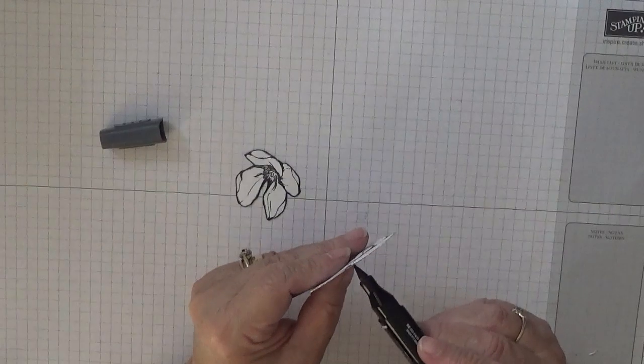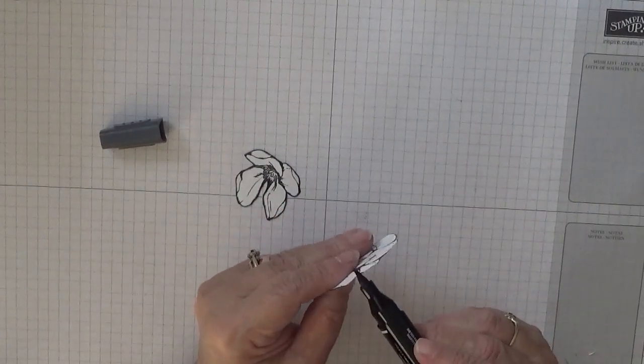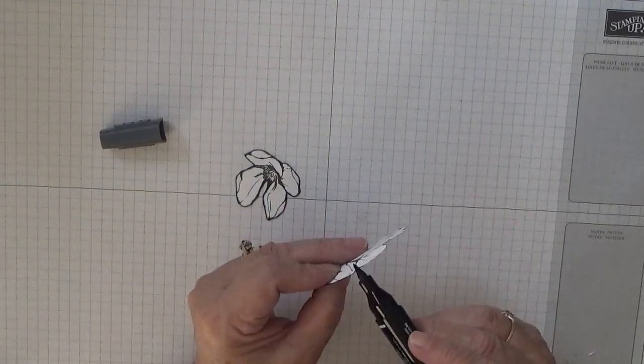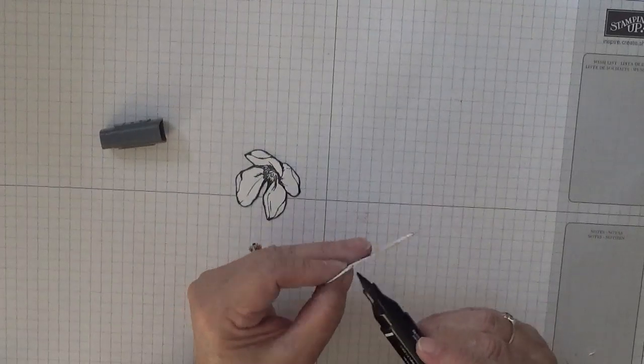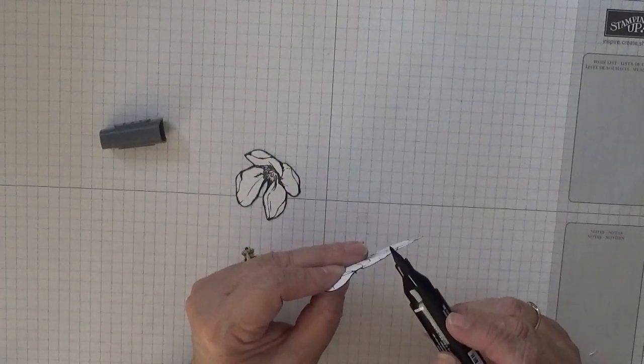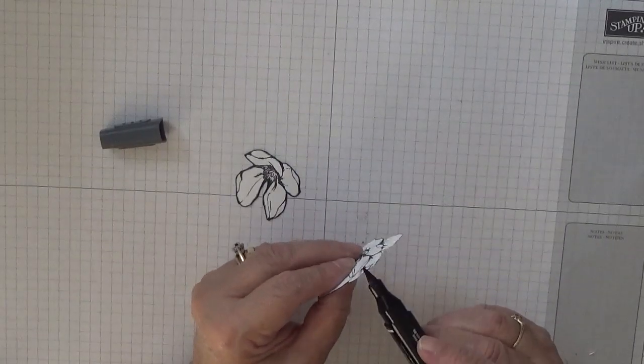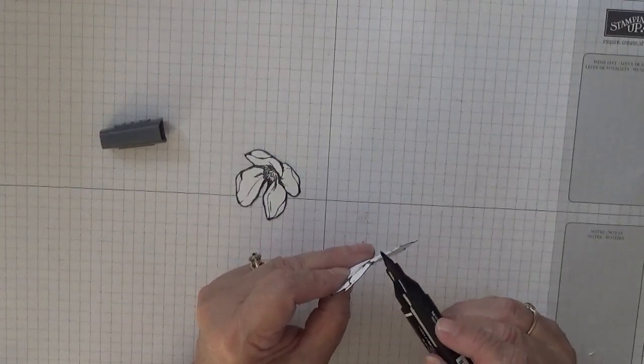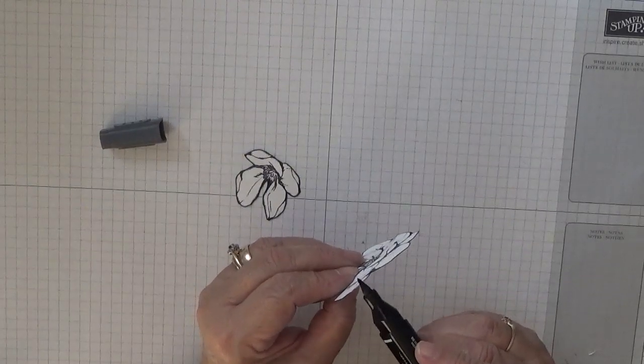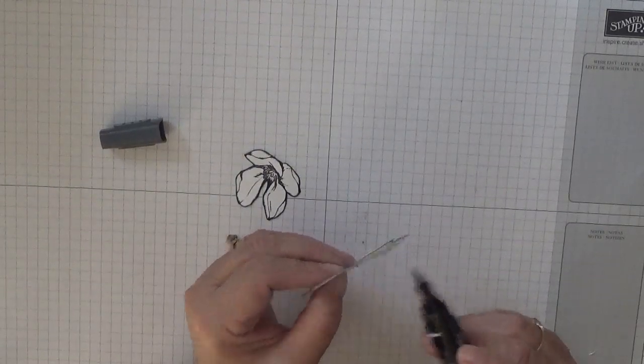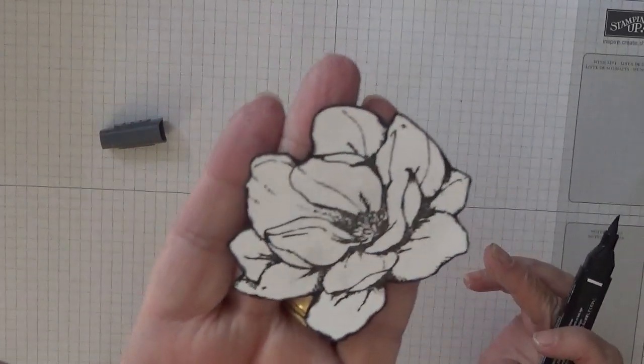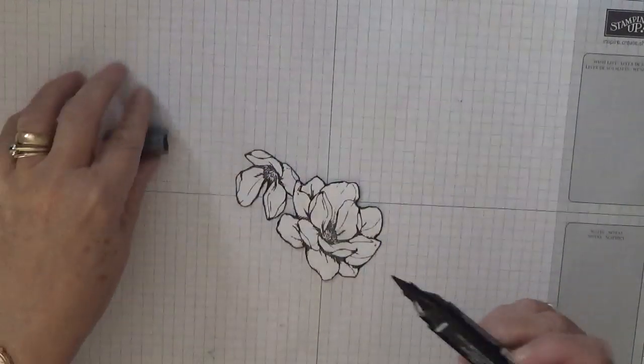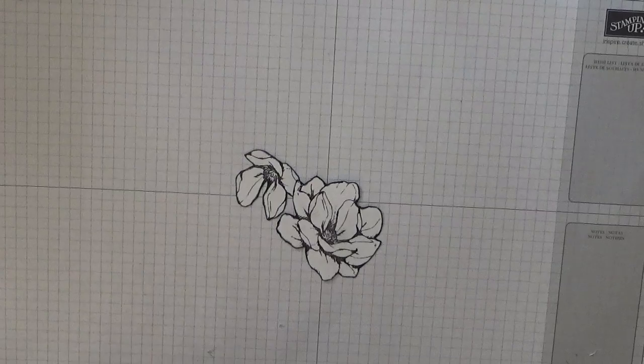Now we're going to do the same with the big flower. There we are. It's all like that on the back. That's all we need to do with that.